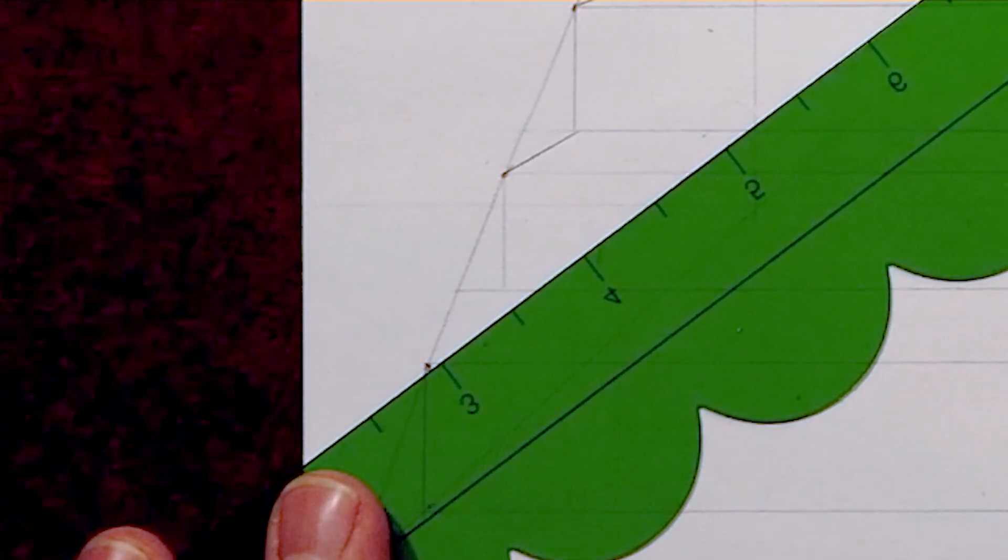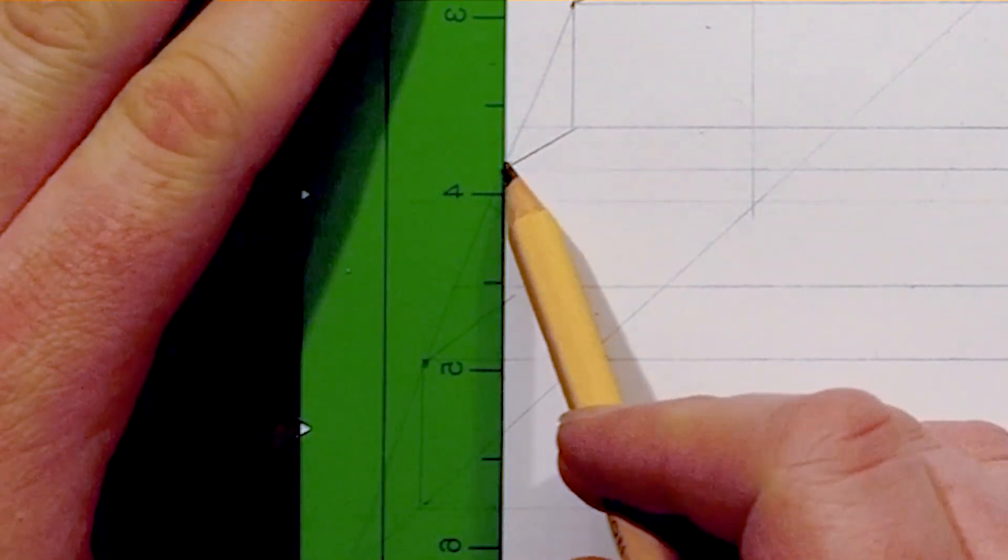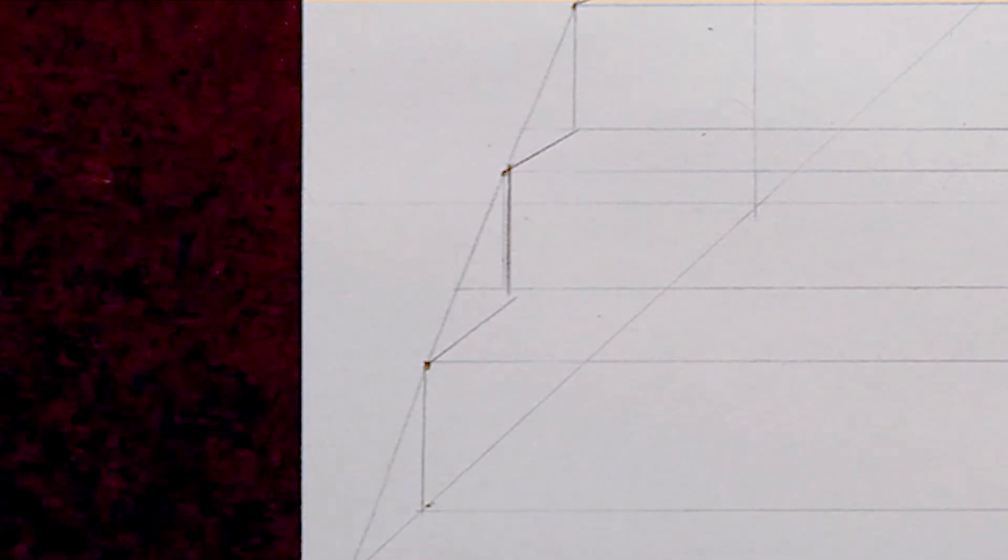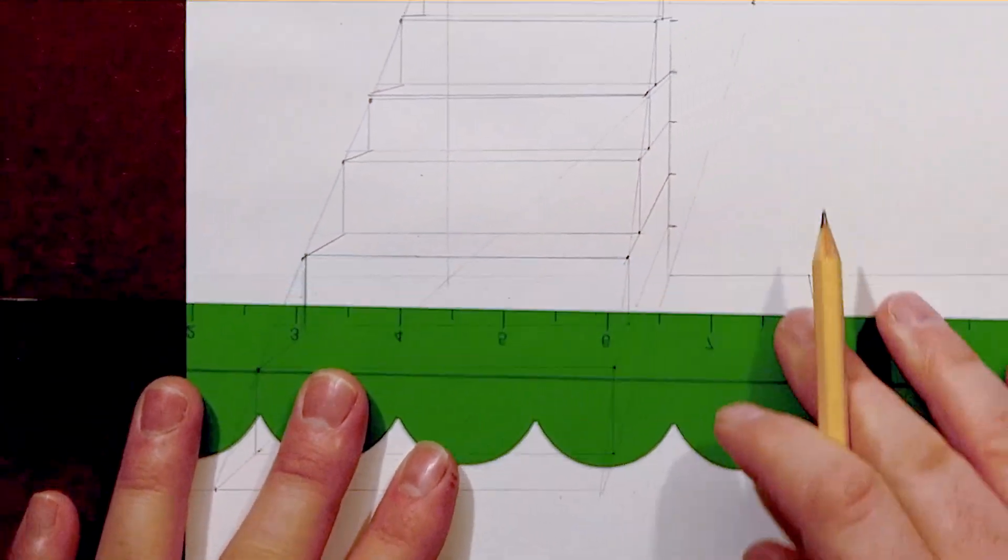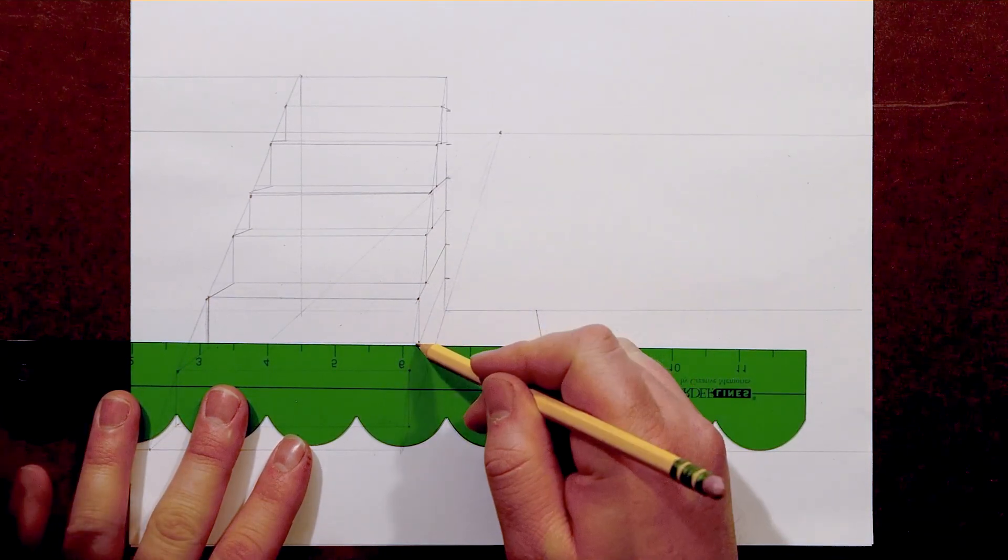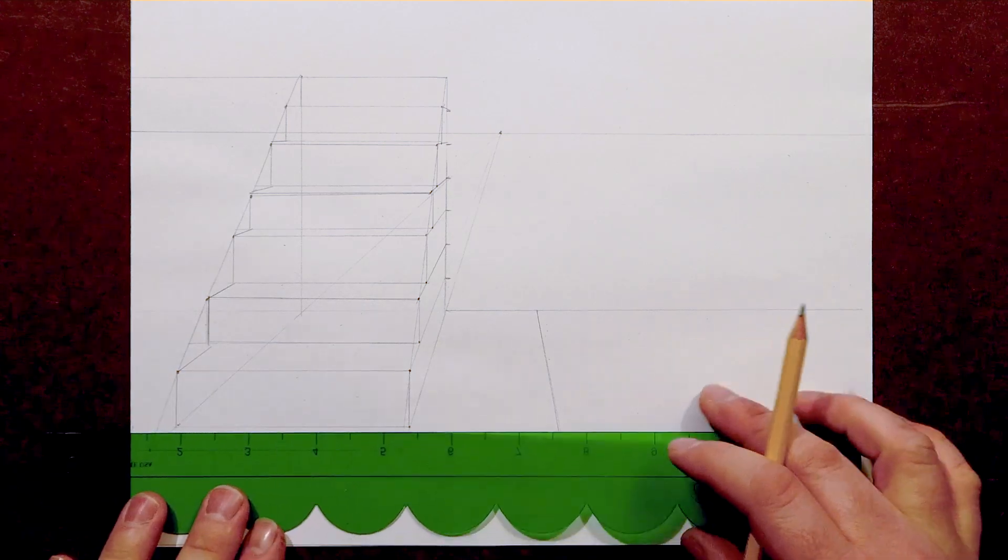In this case, you can see an example of that. When I connect it to the vanishing point, there's a slight disagreement where those lines would come together. At this stage, since it's in pencil, I'm not too worried about it, but I have my eye on it. So when I do go over this in marker, it's definitely going to be resolved a little bit clearer.